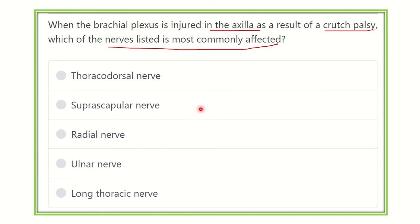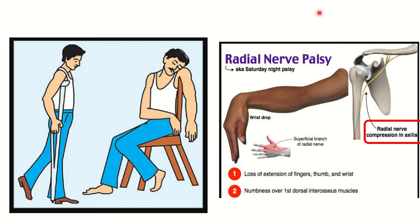We have to find out which option is compatible — which nerve is affected at the axilla in crutch palsy. Here we can see a man using a crutch, and the upper end of the crutch lies at the axilla. This can also occur in Saturday night palsy, where the upper part of a chair compresses the axilla.